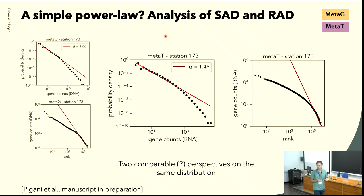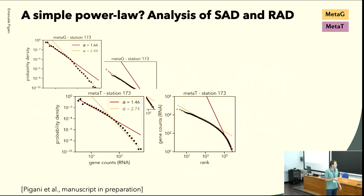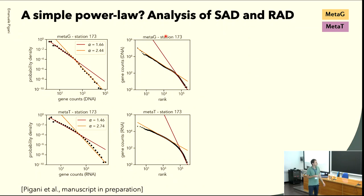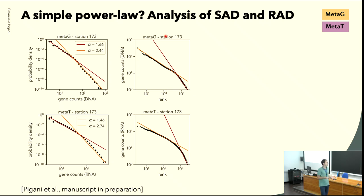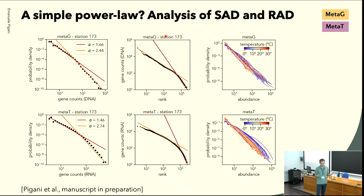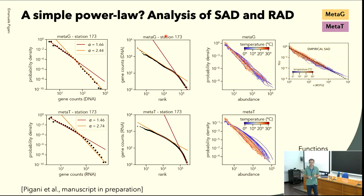The first thing one can do is to try to fit the most abundant genes separately. We performed another maximum likelihood fit for the most abundant genes, and it seems that there are two regimes, each following a different power law with different slopes. Also, if you look at the whole distribution for all stations, comparing with the metabarcoding shown before, you can clearly see that the metatranscriptomics in particular follows something different than just a simple power law.